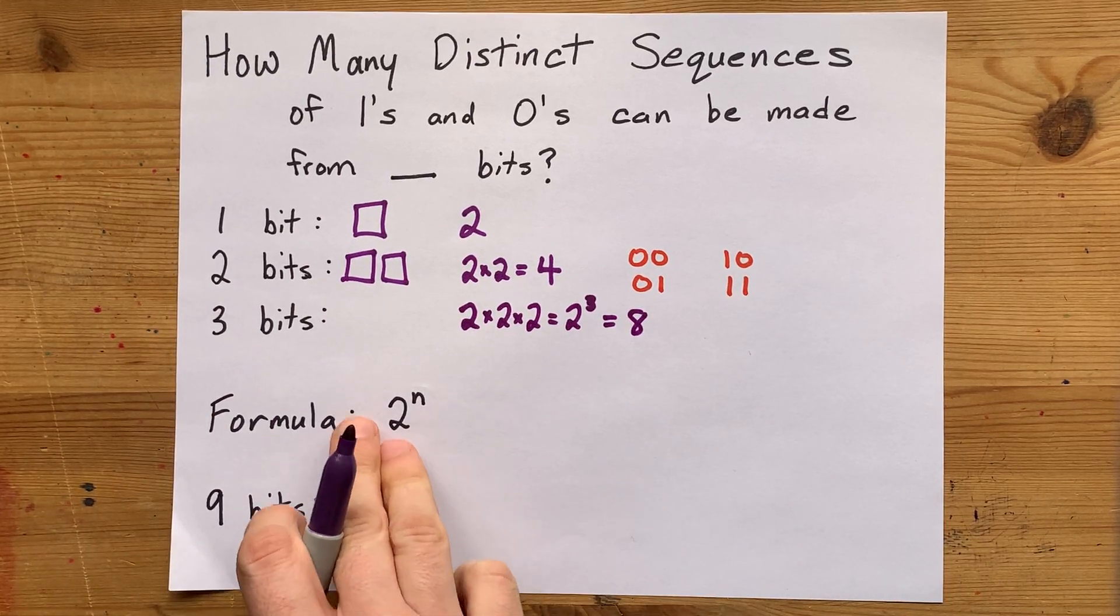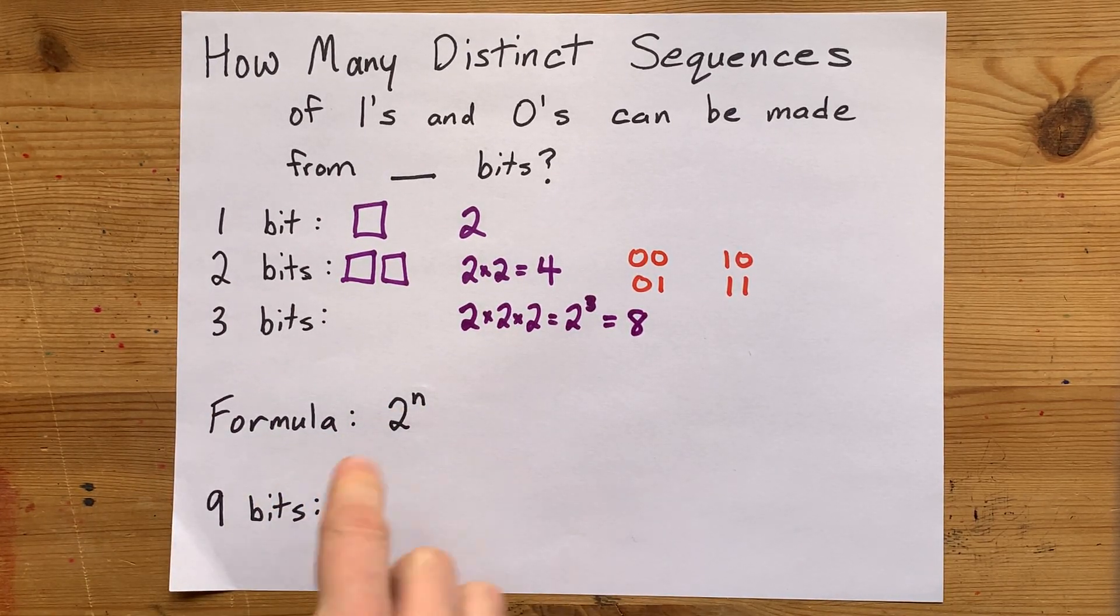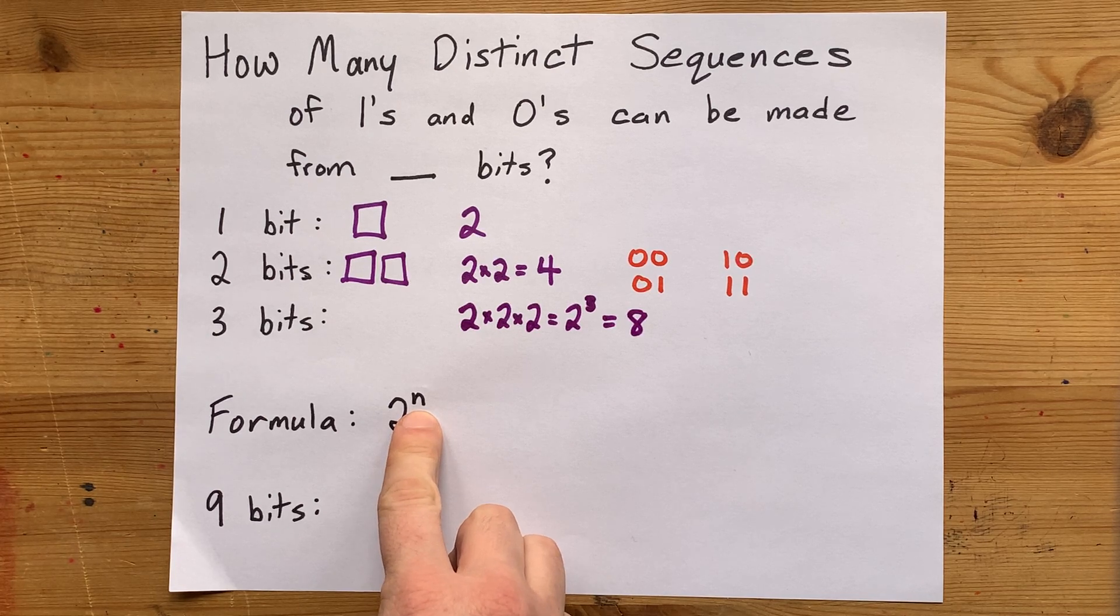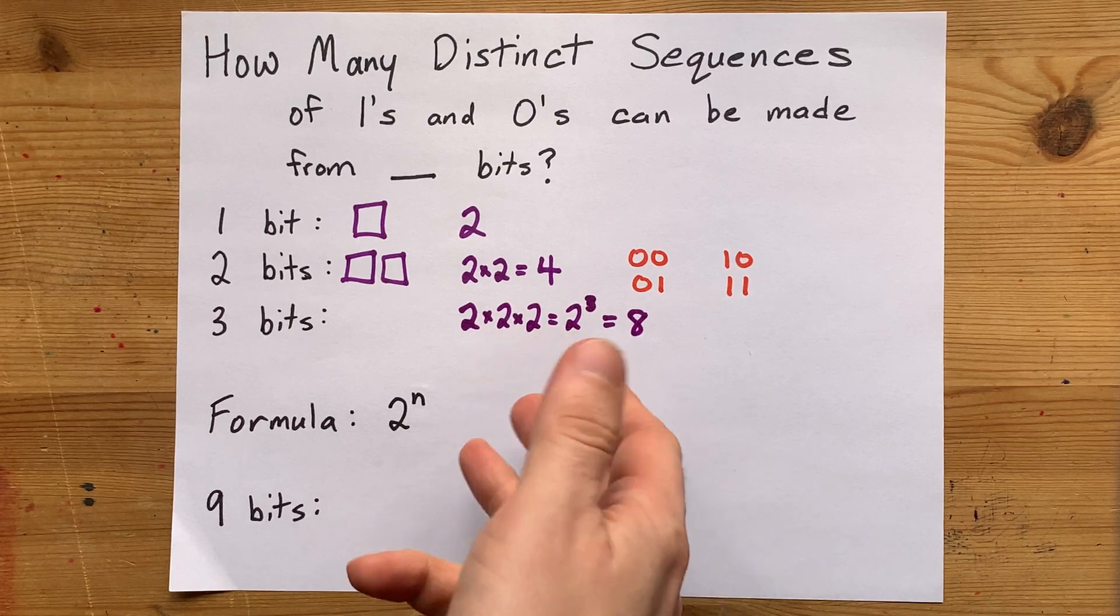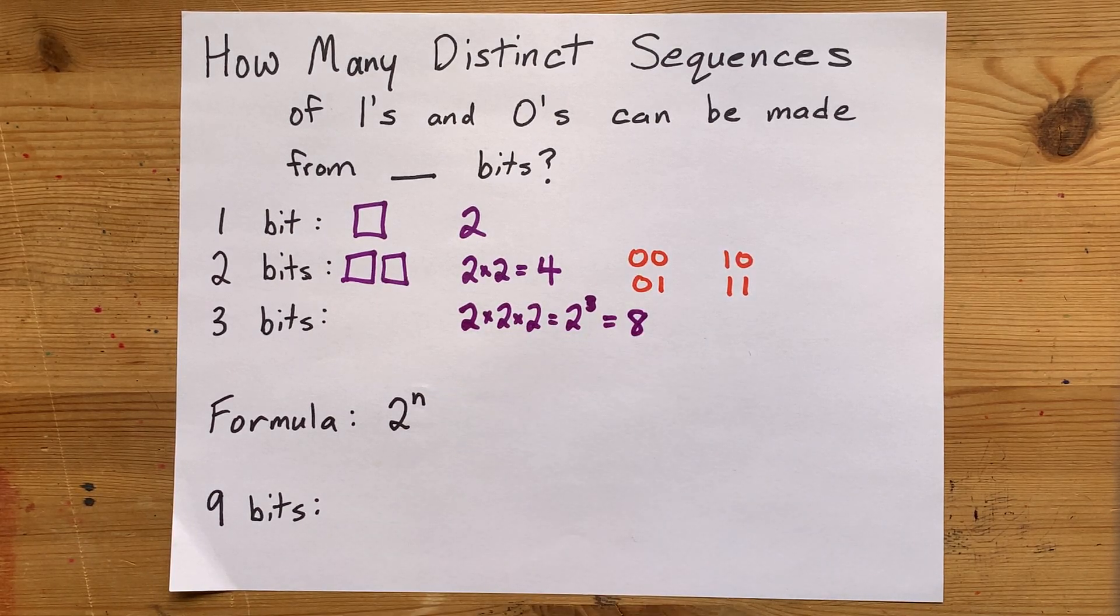That leads you to this formula, two to the n. If you know you have n bits, then two to the power of n is the distinct number of sequences that can be made from it.